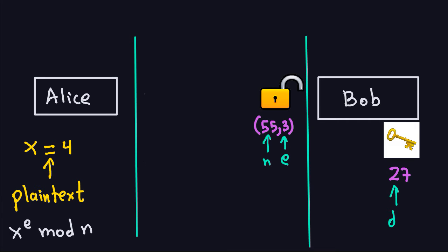Hello and welcome again. In the previous video we computed the public key and the private key for Bob so communication can be done between Alice and Bob. The public key is (55, 3), where 55 is the modulus and 3 is the public exponent — anyone can see it. Bob also has a private key, which only he can see, which in this case is 27.